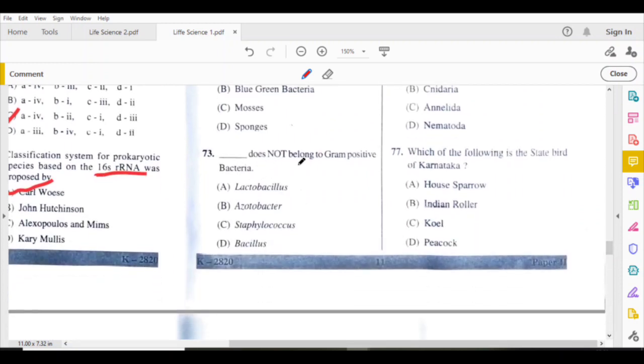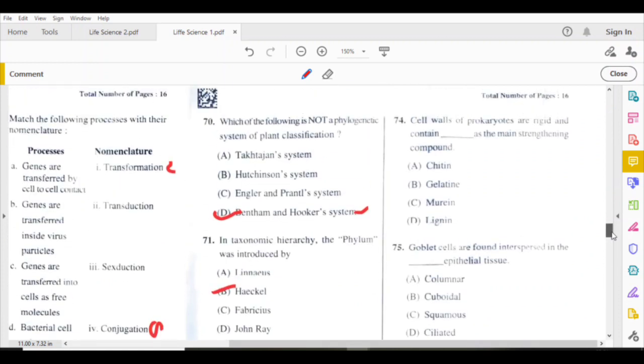Which does not belong to Gram-positive bacteria? Here, Acetobacter. Bacillus, Lactobacillus, Staphylococcus, these are Gram-positive bacteria. Cell walls of prokaryotes are rigid and contain murein as the main strengthening compound.